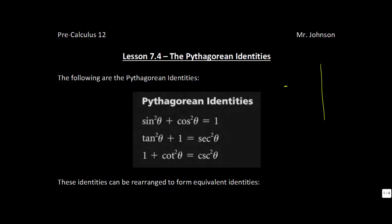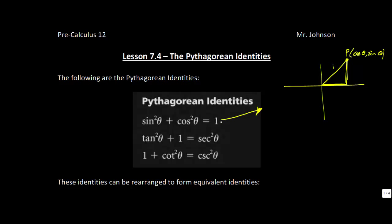I want to start by showing where these Pythagorean identities come from, focusing on the first one. If we have a triangle where point P is located at cosine of theta and sine of theta, and we have a unit circle such that the radius is 1, then if you take the horizontal distance and square it — that's cosine squared — and take the vertical distance and square it — that's sine squared — it equals the hypotenuse squared, which is just 1.